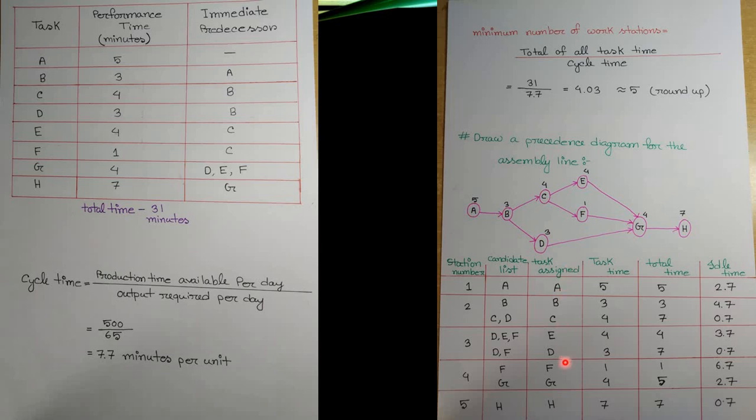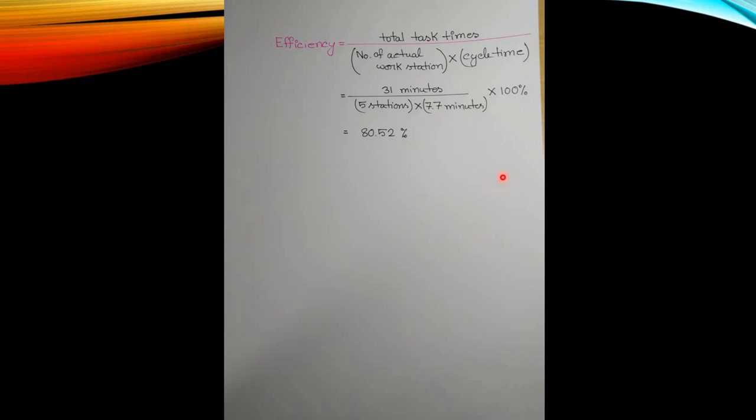Task E takes 4 minutes and F takes 1 minute, and D takes 3 minutes. Then F and G together: F is 1 minute and G is 4 minutes, totaling 5 minutes with 2.7 idle. Task H takes 7 minutes, leaving 0.7 idle time. We have completed all workstations.